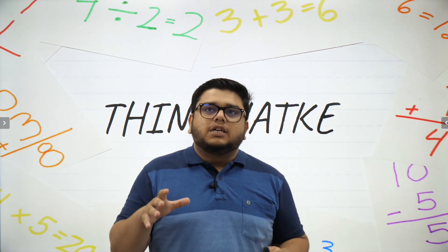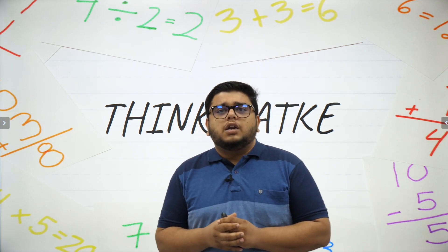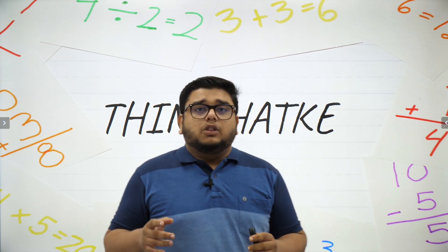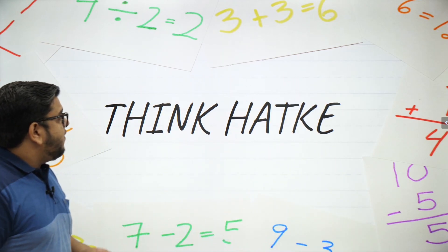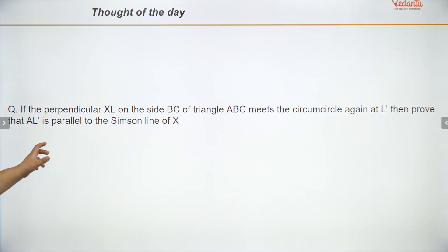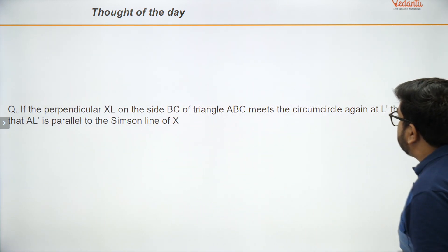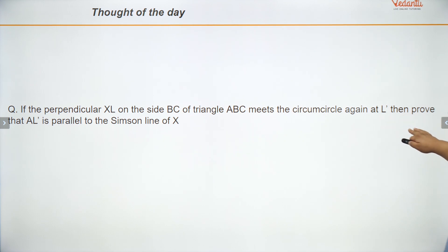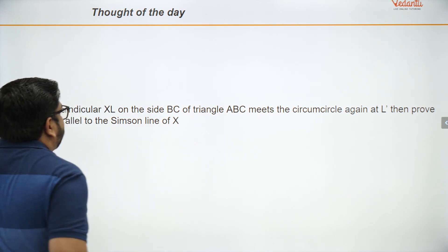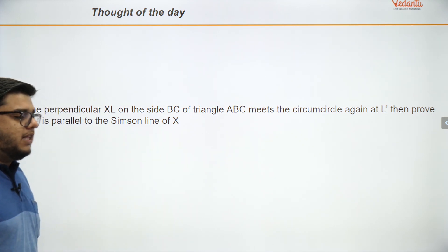In the last class I gave you guys a question on Simpson line. The question that I gave was: if the perpendicular XL on the sides BC of triangle ABC meets the circumcircle again at L, then prove that AL is parallel to the Simpson line of X.